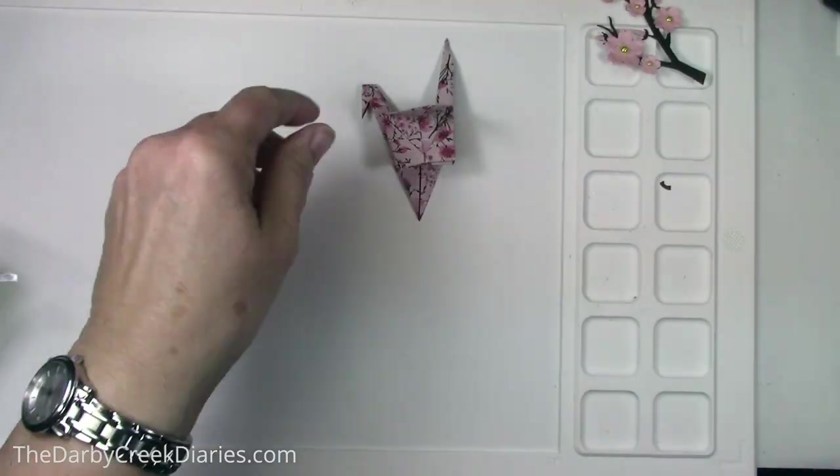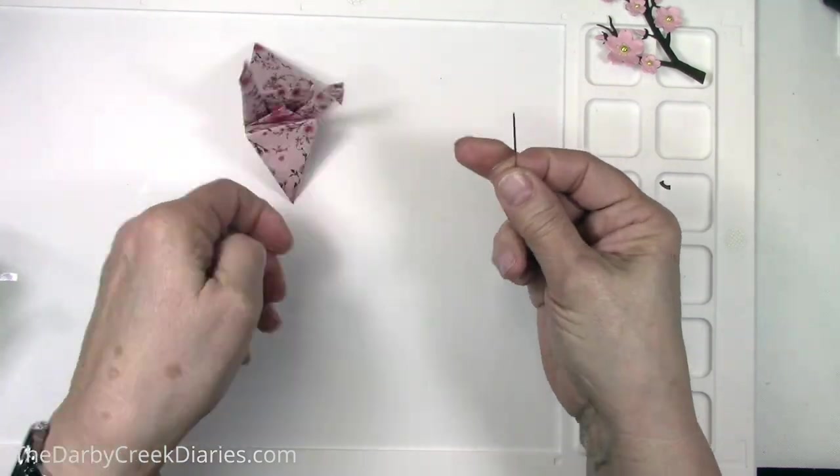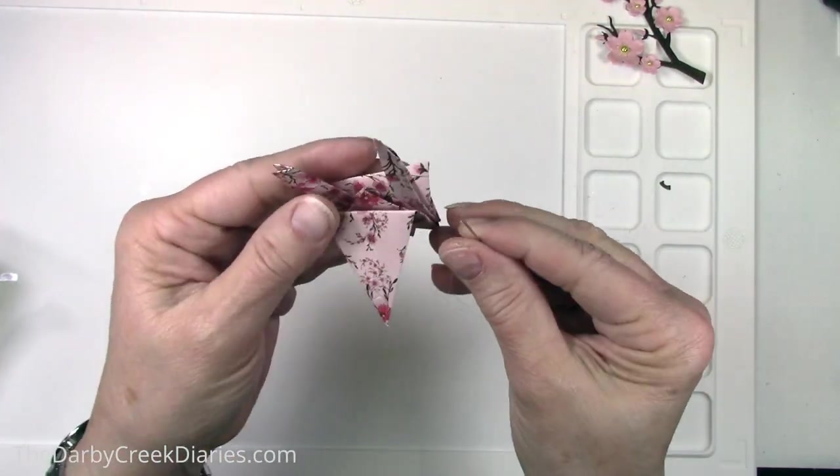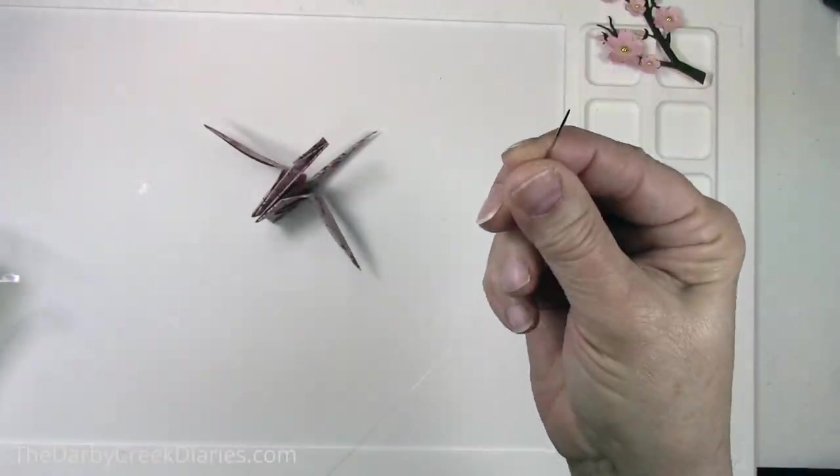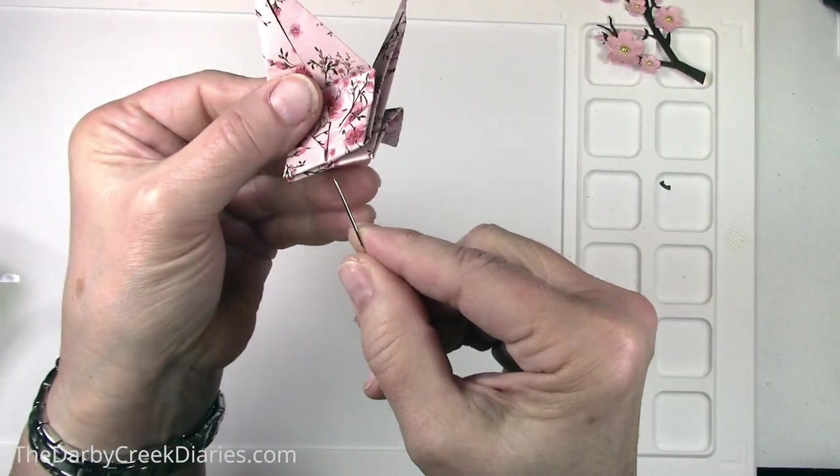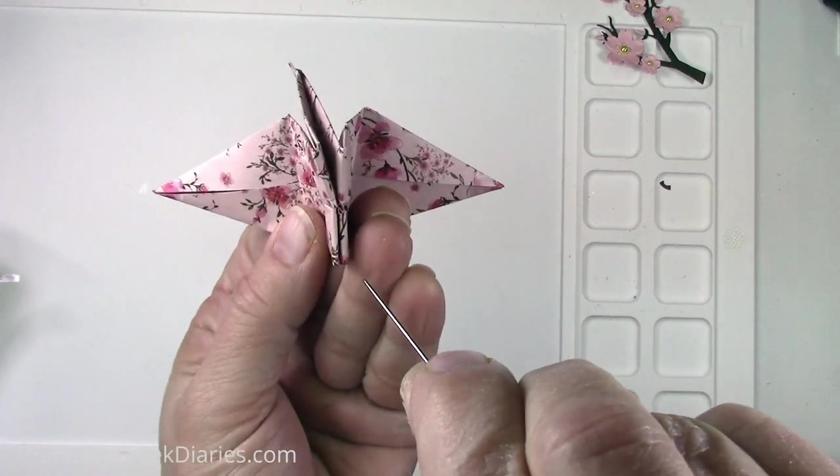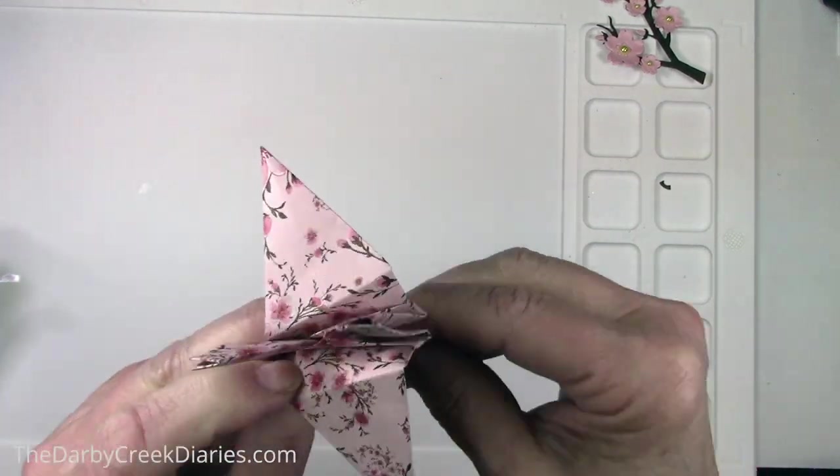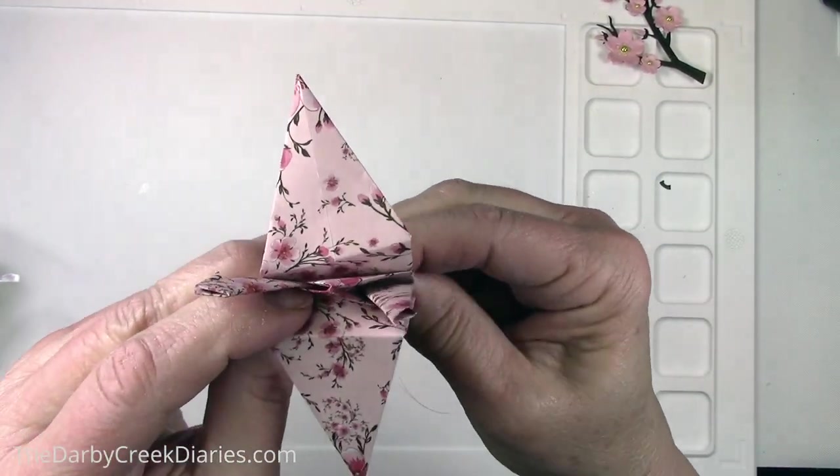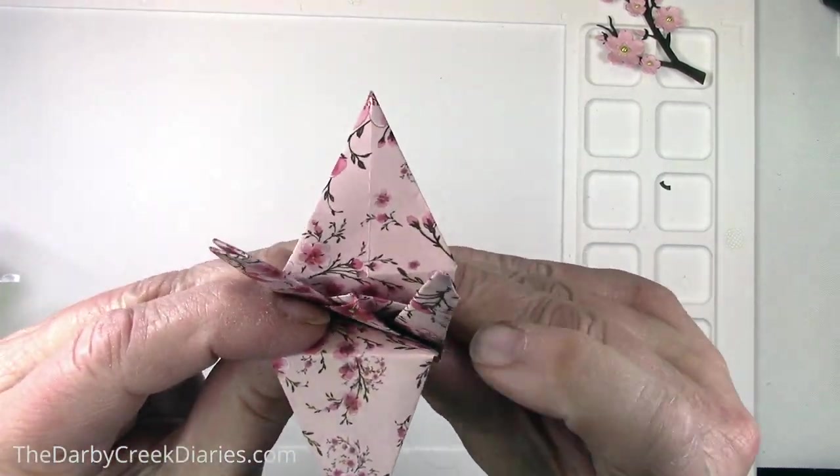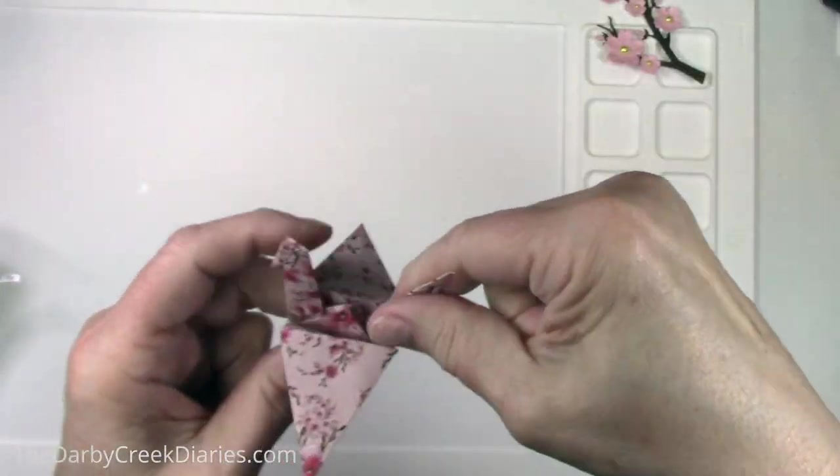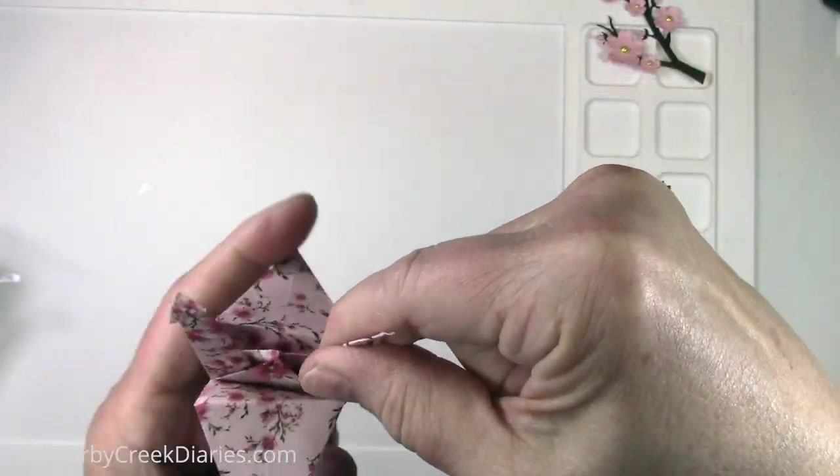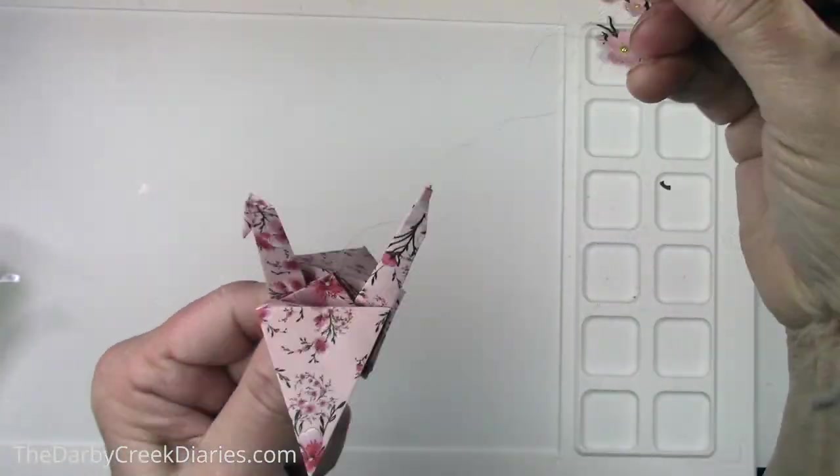Later on we put a little decoration in it but it's time to string the crane. So you take clear thread which is not real easy for you to see and I should have used another color. And there's a hole in the bottom right in the center of the crane and you run your needle up through to the point or nearly the point close enough and leaving a lot of tail because we're going to need it for the bottom.